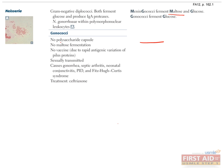Uncomplicated gonorrheal infections will result in purulent urethritis for males, with symptoms of dysuria and penile discharge. Infected women can experience acute cervicitis with abdominal pain, vaginal discharge, dysuria, or more commonly no symptoms at all. Treatment involves a third-generation cephalosporin antibiotic, usually intramuscular ceftriaxone injection.